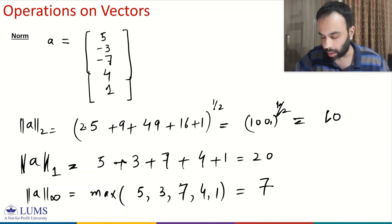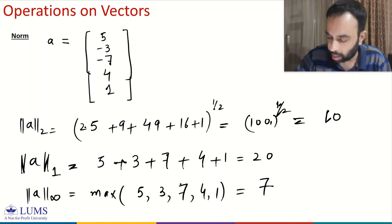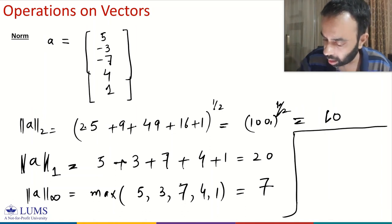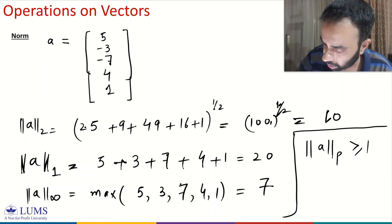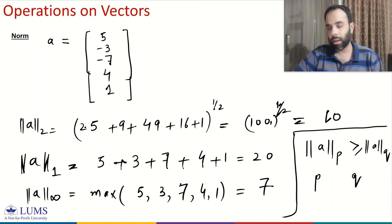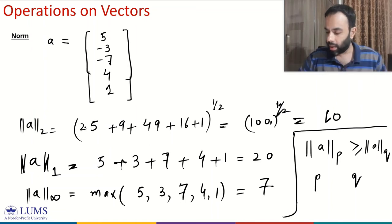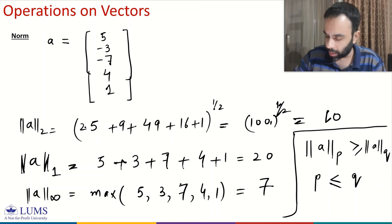From this example we can observe that the 1-norm (20) is greater than the 2-norm (10), which is greater than the infinity norm (7). This reflects a general mathematical relationship: for p less than or equal to q, the p-norm is greater than or equal to the q-norm. So as p increases, the p-norm decreases, and this can be proven mathematically.